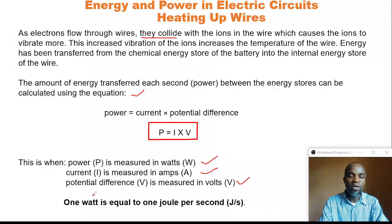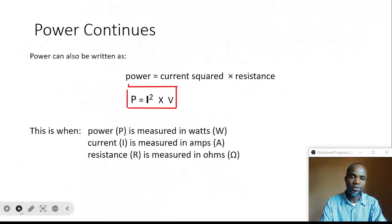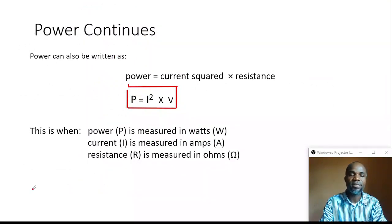On our next slide, power continues. Power can also be written as current squared times resistance, P = I² × R. Very important.